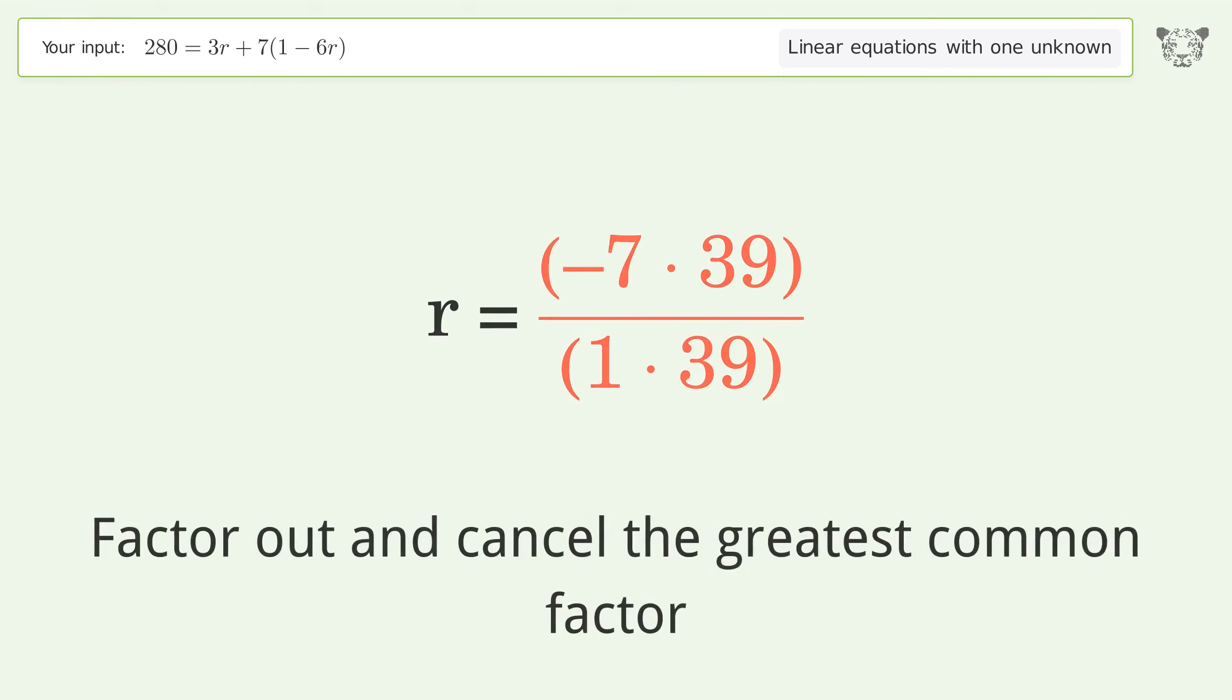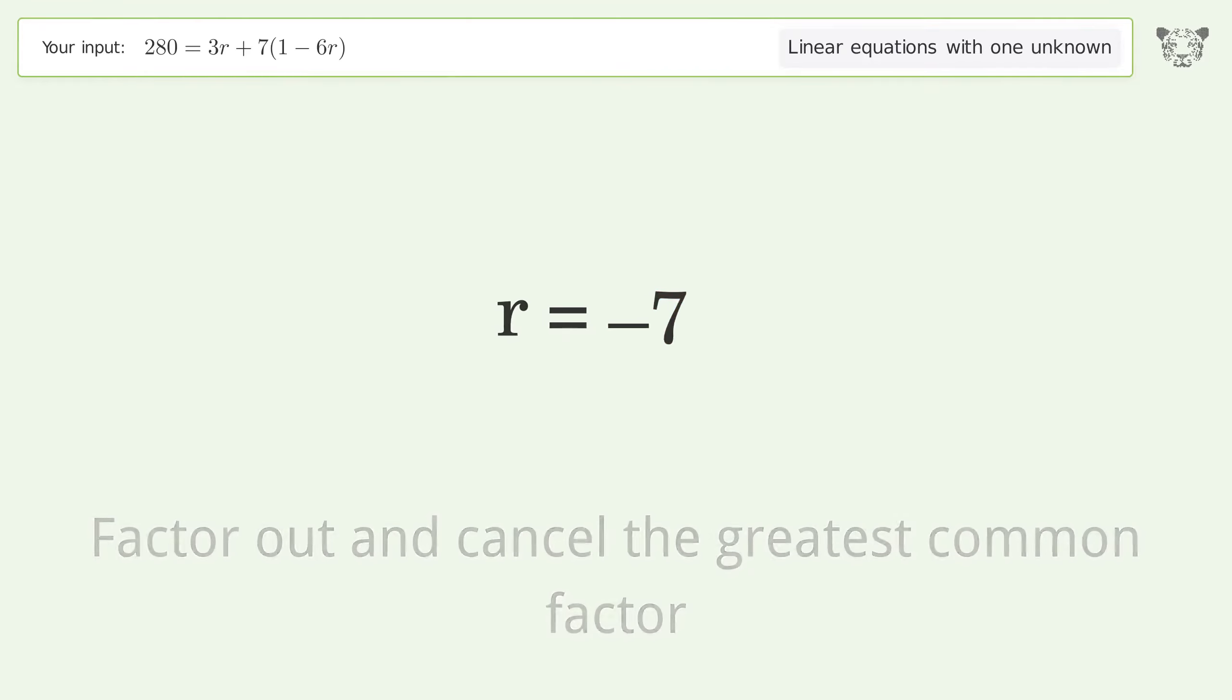Factor out and cancel the greatest common factor. And so the final result is r equals negative 7.